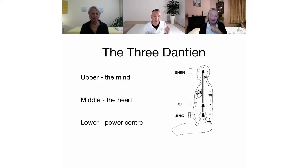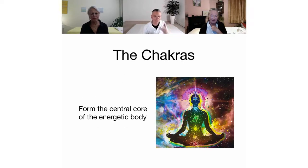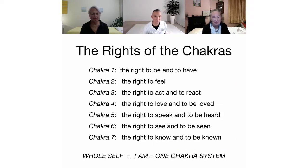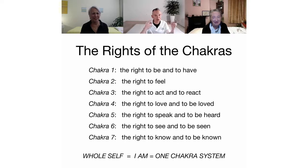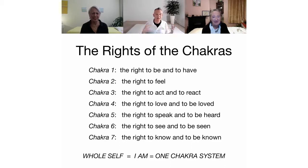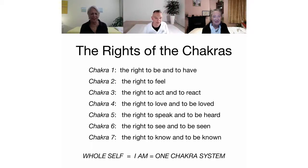We discussed how many chakras there are — the seven basic chakras plus the soul star and earth star, with many others depending on the system. Gabriella then took us through the rights of the chakras: the right to be and to have, the right to feel, the right to act and react, the right to love and be loved, the right to speak and be heard, the right to see and be seen, and the right to know and to be known.